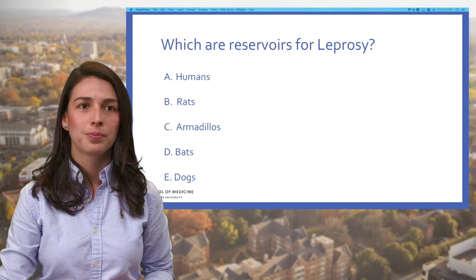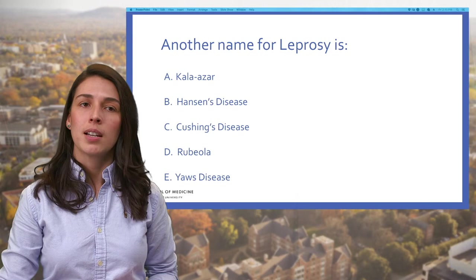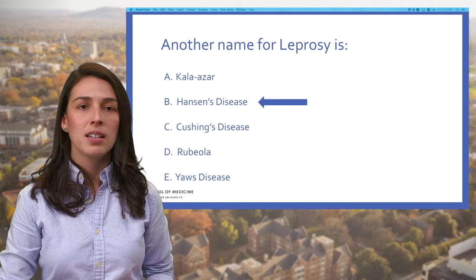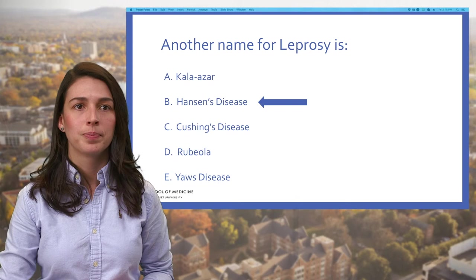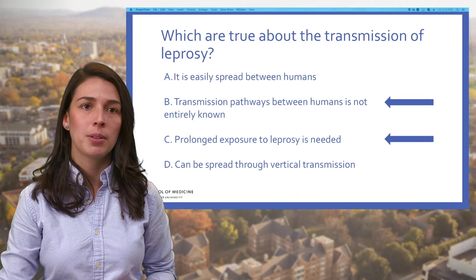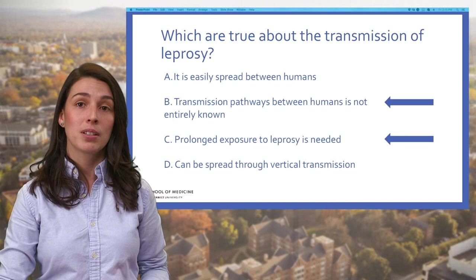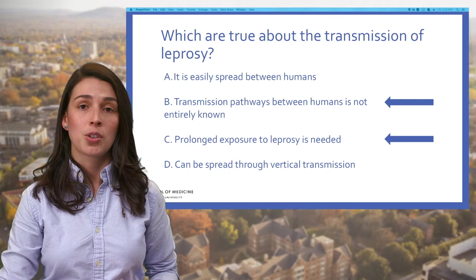It's time for questions. Which are reservoirs for leprosy? The answer is A and C — humans and armadillos are both reservoirs for leprosy. Another name for leprosy is Hansen's disease; Dr. Hansen discovered leprosy in 1873. Which are true about the transmission of leprosy? The answer is both B and C. Although we don't know entirely how the transmission pathway works, prolonged exposure to leprosy is needed, hence it is not easily spread between humans. Additionally, leprosy is not spread through vertical transmission or sexual transmission.